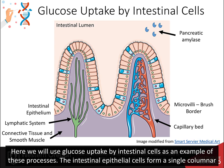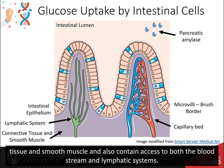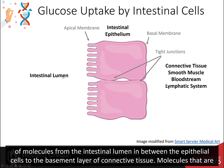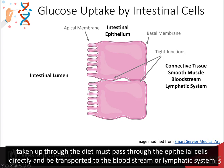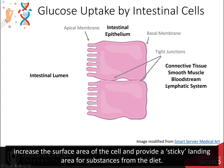The intestinal epithelial cells form a single columnar layer protecting the inside of the body from dietary substances passing through the intestinal lumen. They overlay the connective tissue and smooth muscles and contain access to both the bloodstream and the lymphatic systems. These cells have tight junctions connecting them, preventing movement of molecules from the intestinal lumen to the basement layer. Molecules taken up by the diet must pass through the epithelial cells directly. The luminal side, called the apical membrane, contains microvilli that increase the surface area and provide a sticky landing area for dietary substances.